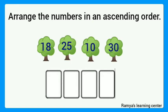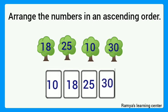Next. The given numbers are 18, 25, 10, and 30. Arrange these numbers in an ascending order. Yes, first number is 10, then 18, then 25, and finally the biggest number is 30. The numbers are 10, 18, 25, and 30.